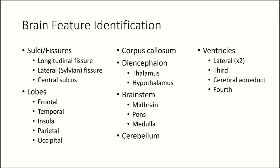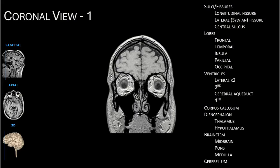These are the brain features to look for as we scroll through different views. Starting with the coronal view, we will look for the features listed on the right. Not every feature can be seen at any given position. This is our first coronal view; we will sequence posteriorly for a total of six views. At this very anterior position, we can find the frontal lobe and the division between the cerebral hemispheres called the longitudinal fissure.